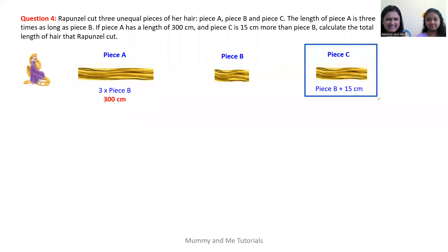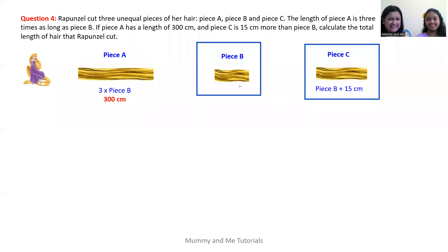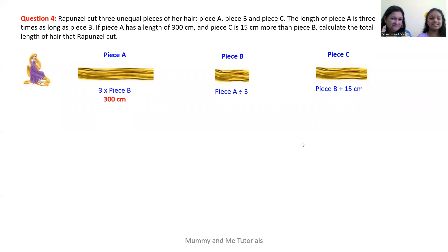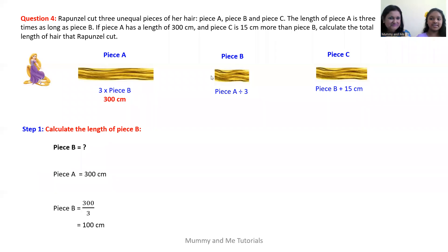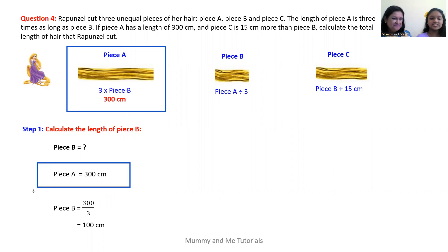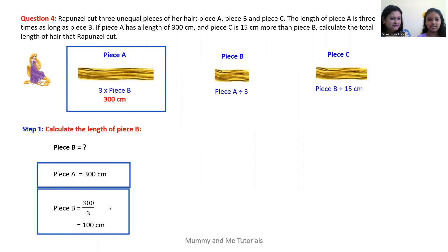In order to calculate the length of piece C, we first need to calculate the length of piece B. So our first step is to calculate the length of piece B. Piece B is unknown, but we know that piece A is 300 centimeters and piece A is three times the length of piece B. Using the opposite rule, we take the length of piece A and divide it by three.